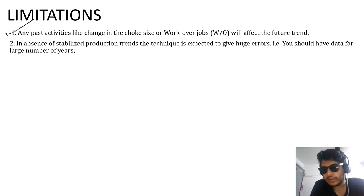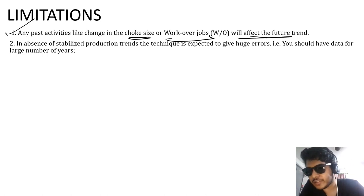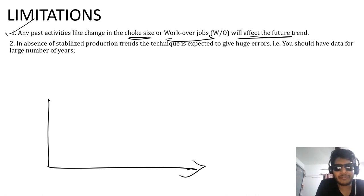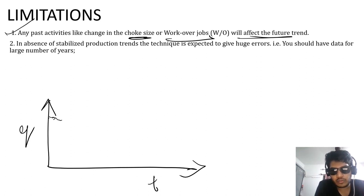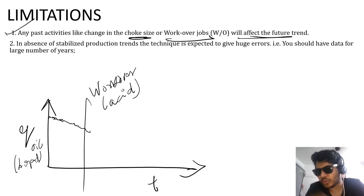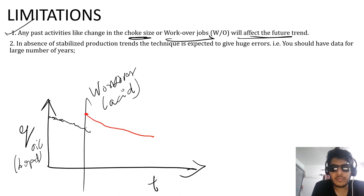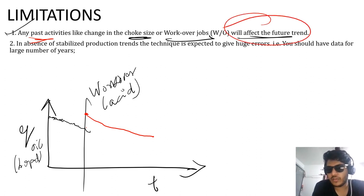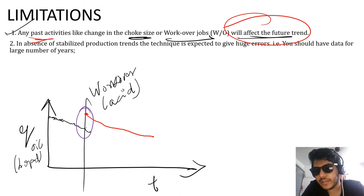Coming to the limitations of Decline Curve Analysis: first, any past activities like change in choke sizes or workover jobs will affect the future trend. Let me show it graphically — plotting q versus time, fluid rate of oil in BOPD. The production is going down, then a workover job, say an acid job, was done. Because of that workover the trend has been affected — you can see it in the graph. Past activities will affect the future trend.